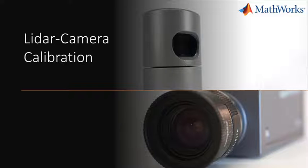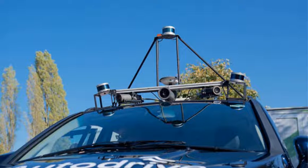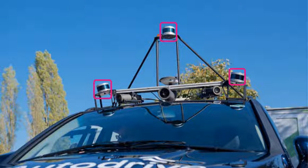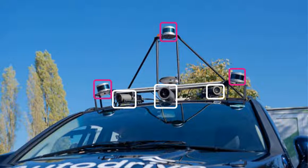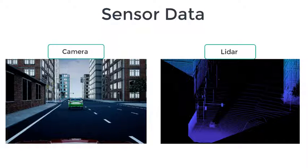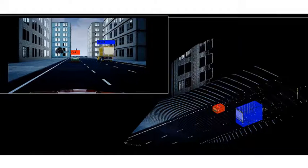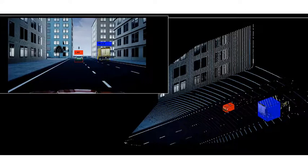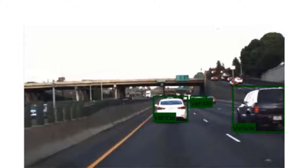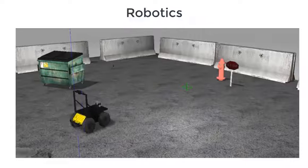LiDAR camera calibration helps to estimate relative position and orientation between a LiDAR and a camera in a system. Cameras provide rich color information while LiDAR sensors provide accurate 3D structural and locational information of objects. When fused together, we can enhance the performance of perception and mapping algorithms for autonomous driving and robotics applications.